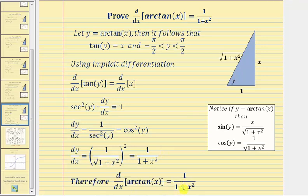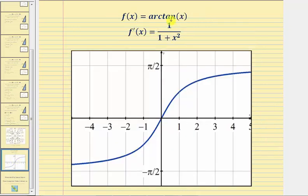Notice how for any value x, we'll have a positive derivative function value, which means the slope of any tangent line on the graph of f of x equals arctangent x will be positive, and the function is always increasing. Here's the graph of f of x equals arctangent x — at any x value, the slope of the tangent line is positive and the function is monotonically increasing over its entire domain. I hope you found this helpful.